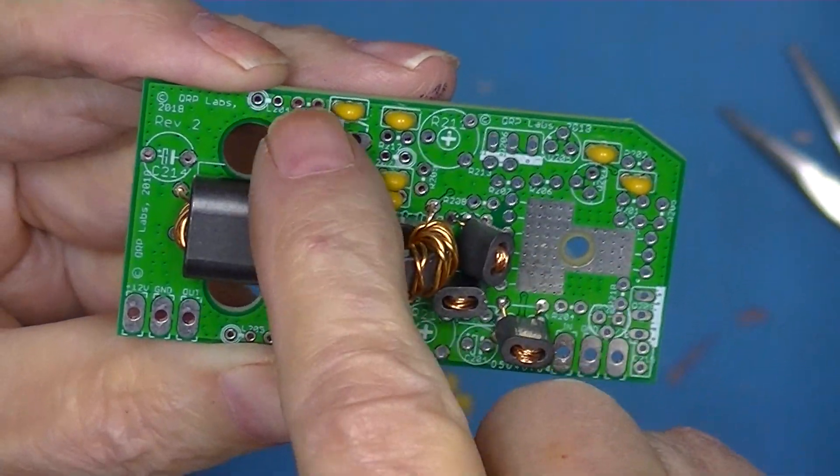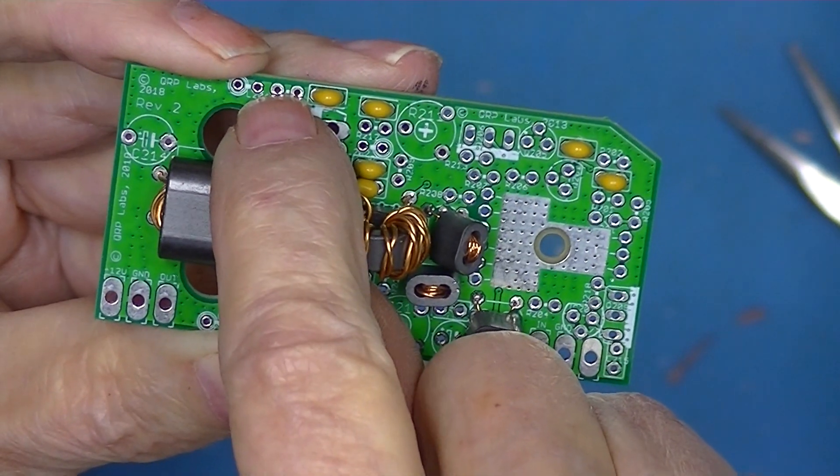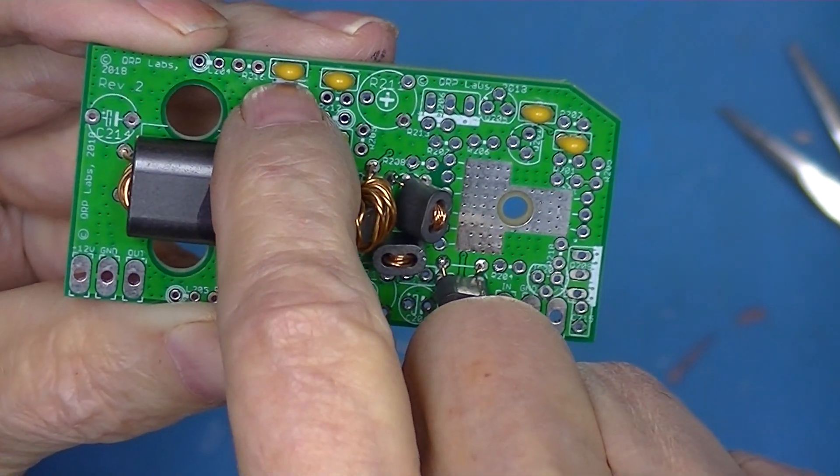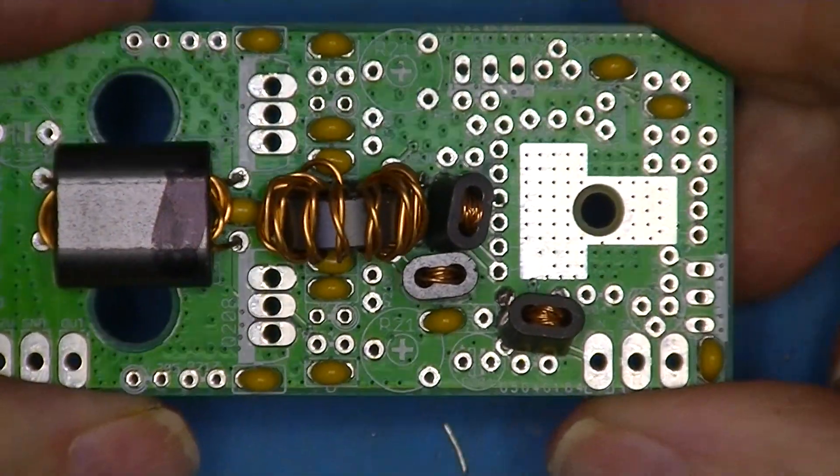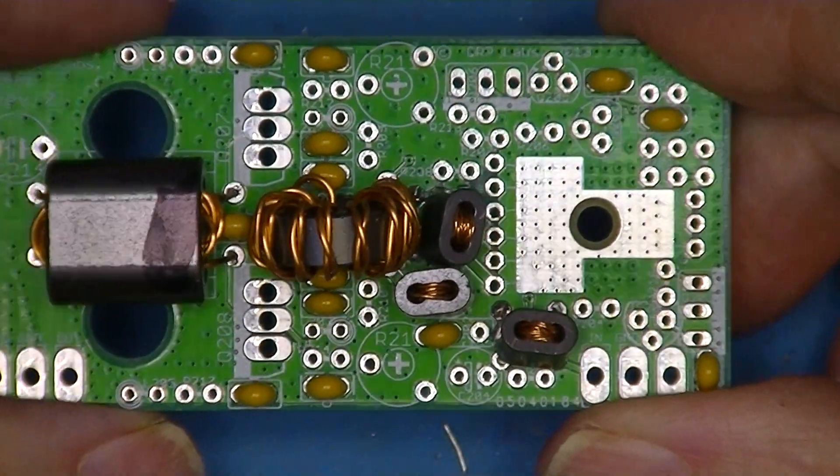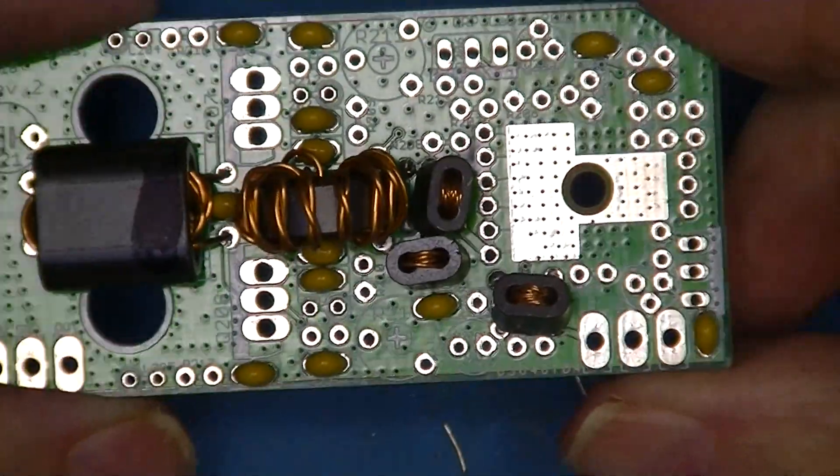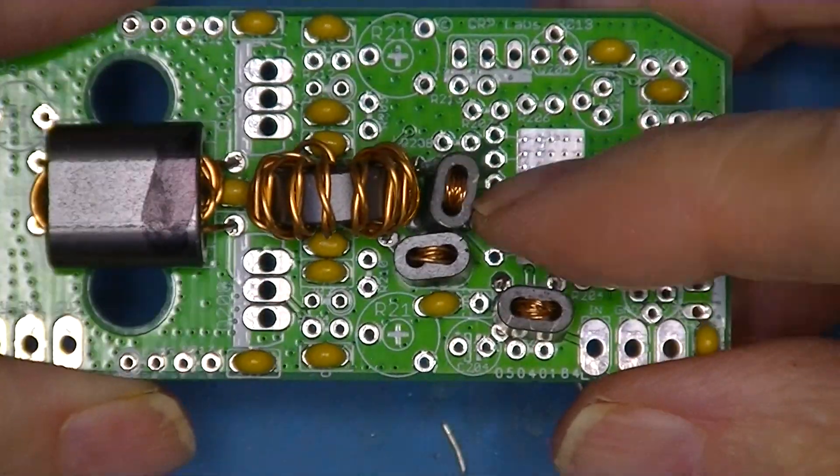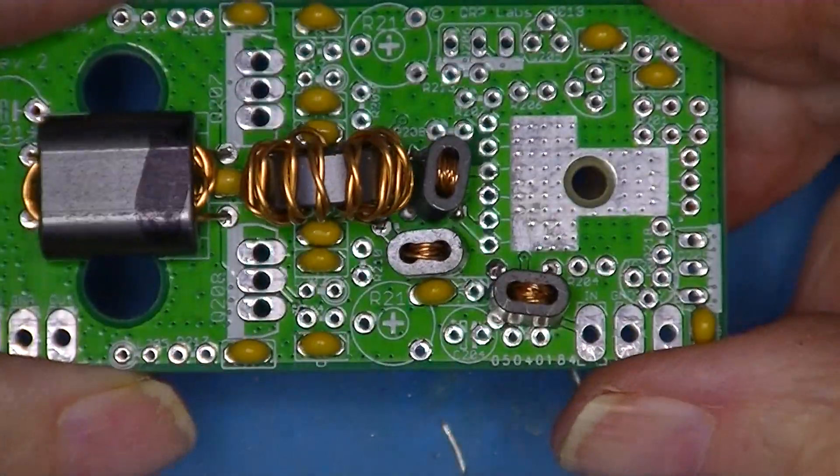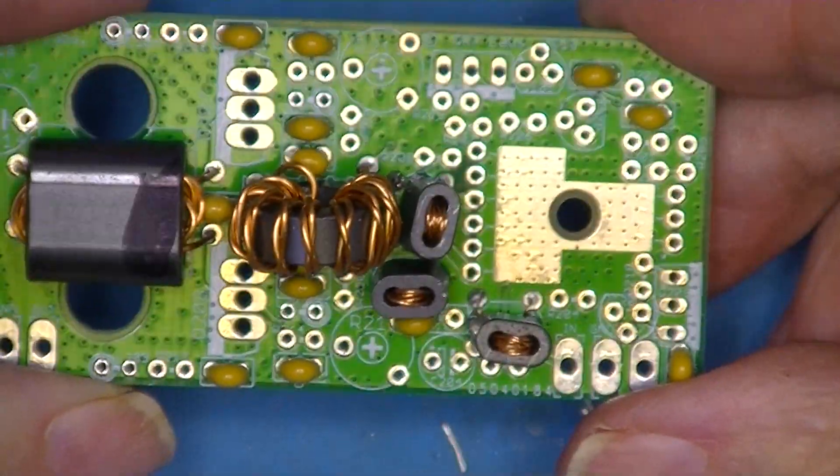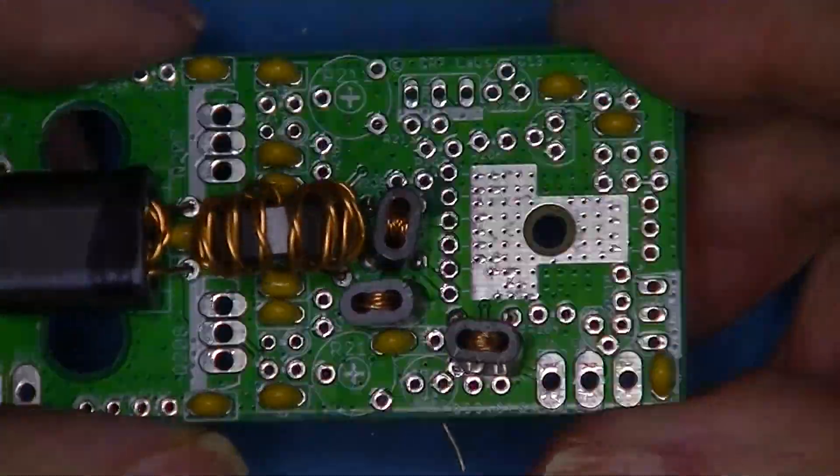For example, I could have installed them in these two holes. Oh, that's not right. They go inside the box. Here we are, I hope, with all the capacitors installed. All the ceramic capacitors, I should say.